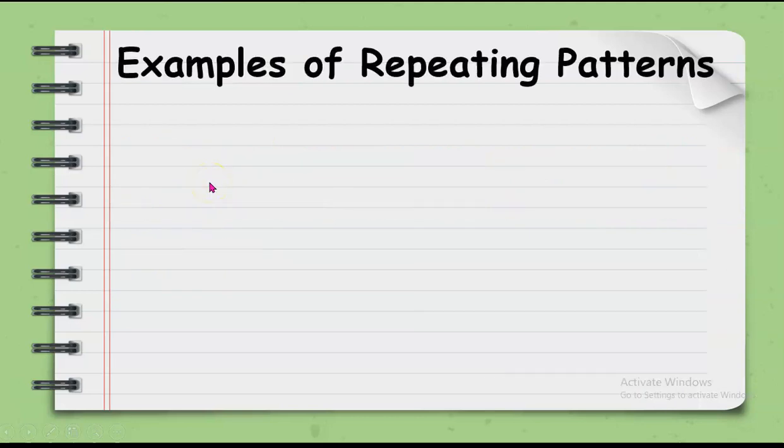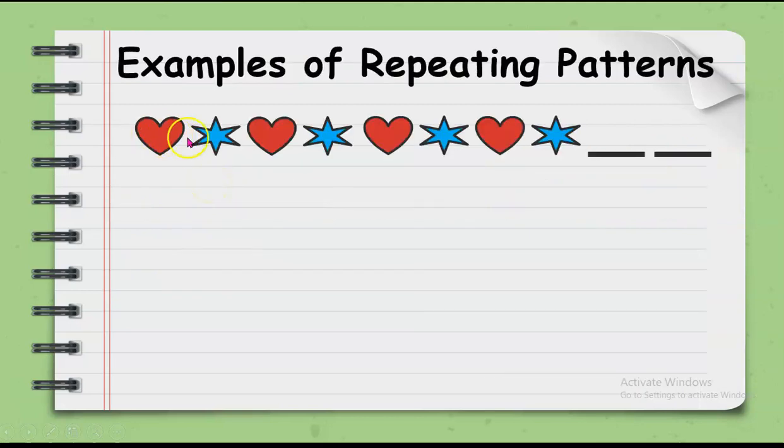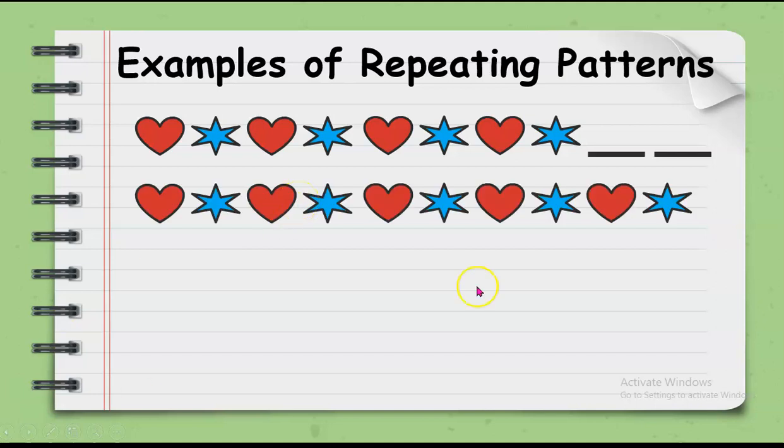Examples, we have here heart, star, heart, star, heart, star, heart, and star. So, what do you think are the next objects? Yes, good job. We will have the heart and the star because they just keep on repeating in this lineup.